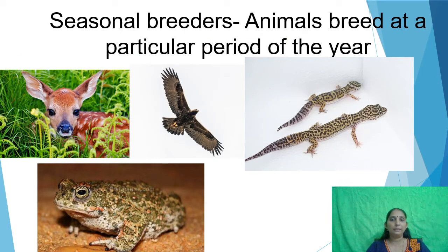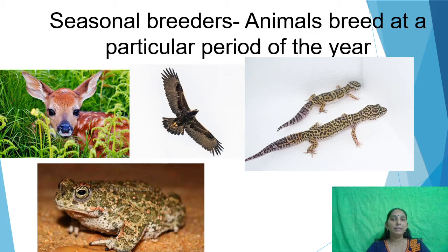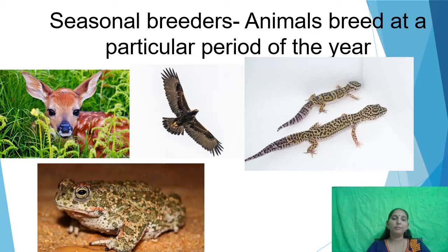Some animals are known as seasonal breeders — they breed and give birth to offspring only at a particular period of the year. Frogs, birds, and many reptiles are examples of seasonal breeders.